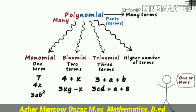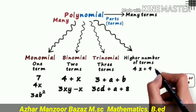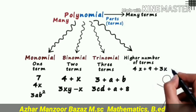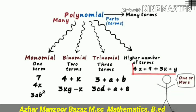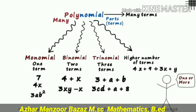Another trinomial example: 3cd plus a plus 8 is also a trinomial. These are all polynomials — remember, it is not that more than three terms is called a polynomial. We also have a higher-number-of-terms example: 4z plus 9 plus 3x plus y is also a polynomial but contains higher number of terms. A polynomial is an expression which contains one or more than one term — always remember this, it will help you in the next classes.